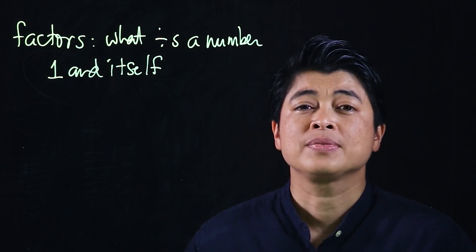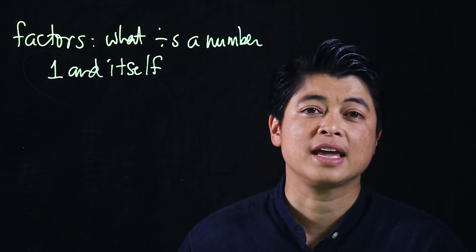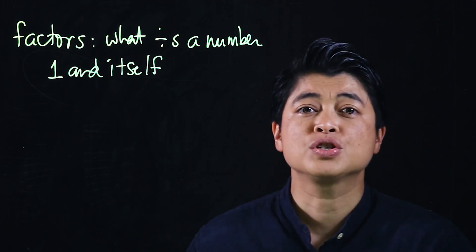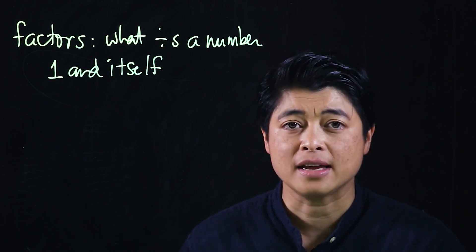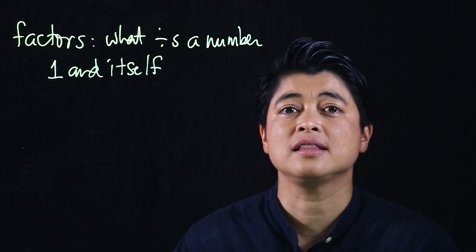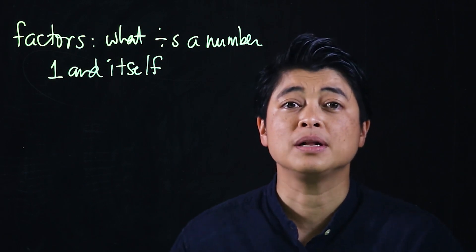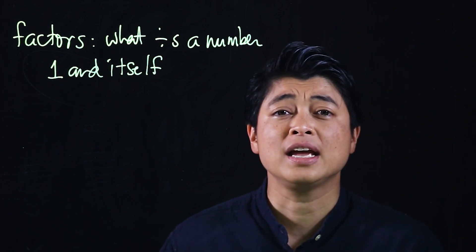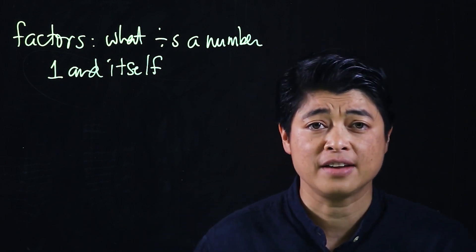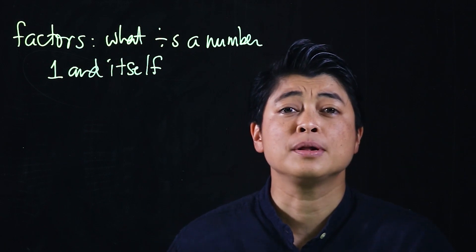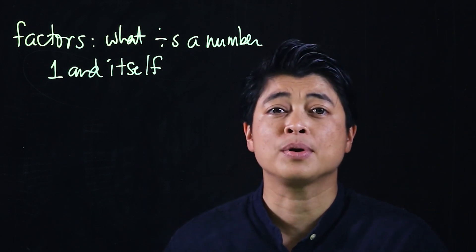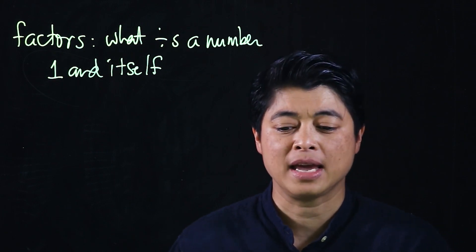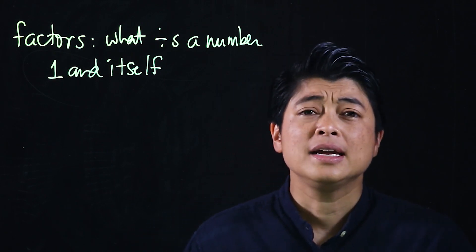If a number is divisible by 2, it should be even. If it's divisible by 3, the digits when you add them up should be divisible by 3 — add the digits and divide by 3. If it's divisible by 5, it should end with a 0 or 5. If it's divisible by 6, it should be an even number and also divisible by 3.